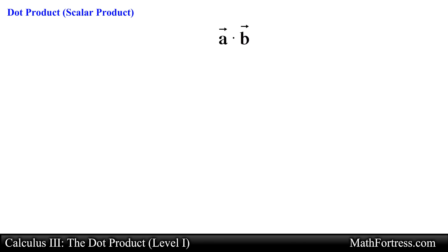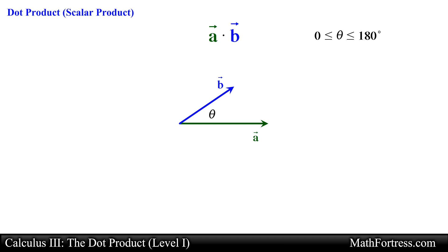To define the scalar product we will start with two planar vectors a and b with known magnitudes and place them tail to tail, where the angle theta between the vectors can range anywhere from 0 degrees to 180 degrees. Let's take a look at the first case when the angle between vector a and vector b is equal to 0 degrees — in other words, they are parallel.